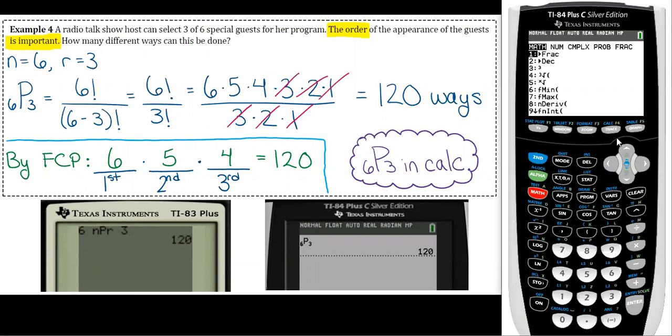So you click math and then go over to probability and then we want the second one down, NPR. And then you'll see that it comes up with these little boxes that you're gonna fill in. So N is always the first one, so that's the 6 for this problem, and then 3 goes in the other one, and then just click enter and you get your answer.